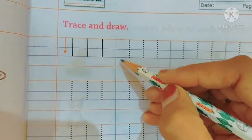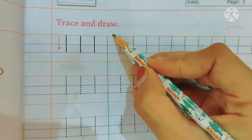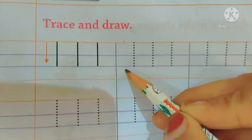1, 2, 3, 4. 4 lines are there. 2 red lines and 2 blue lines. Okay.